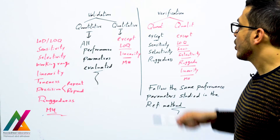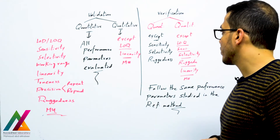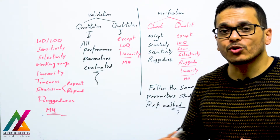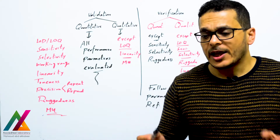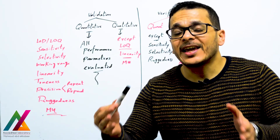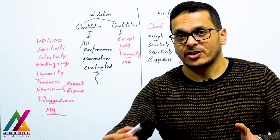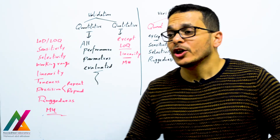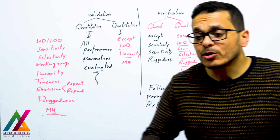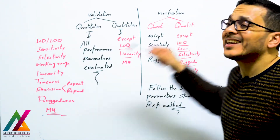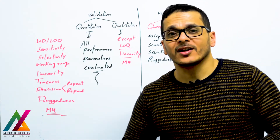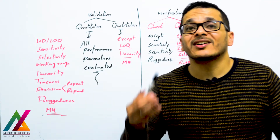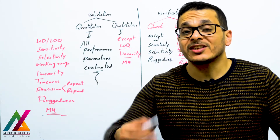For verification of a quantitative method, you evaluate most of the same performance parameters, except sensitivity and selectivity. These are not required because the reference method is already validated — a group of laboratories validated this method before it was published as a standard. You don't need to re-validate the selectivity or ensure the ruggedness, as the method is already confirmed to be rugged and selective for the target analytes.